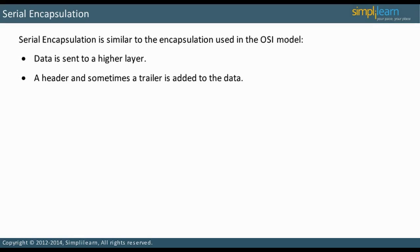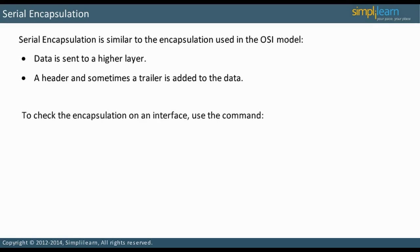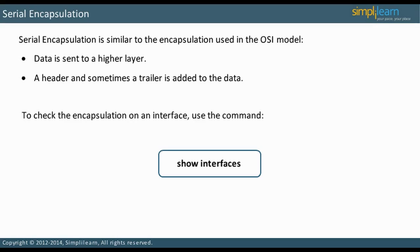PPPoE provides the capability of passing PPP data over a LAN. To check the encapsulation on an interface, use the show interfaces command. Let us now discuss the high-level data link control encapsulation, which is based on a frame recognition process.